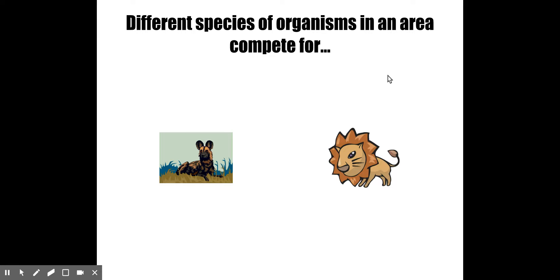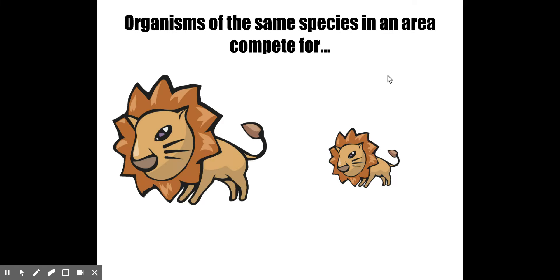For example, there could be two different predators that both prey upon a beetle — different kinds of birds and other organisms might eat that beetle. Different species living in a given ecosystem compete against each other for food, water, shelter, and space. The only thing that organisms of the same species compete for that they don't compete with other species for is mates.